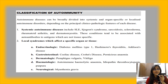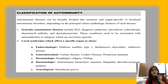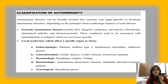Here is the classification of autoimmunity. There are two classifications: systemic autoimmune diseases and local syndromes affecting specific organs or tissues. In systemic autoimmune diseases, antigens are not tissue-specific. Examples include SLE, scleroderma, rheumatoid arthritis, and dermatomyositis, etc.